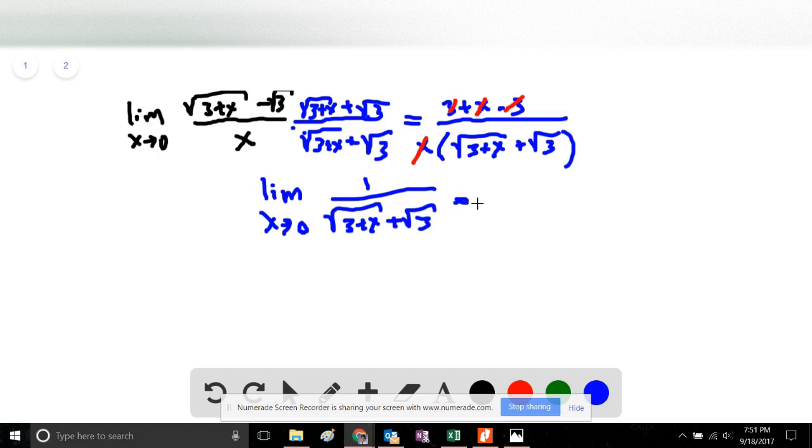If we evaluate this at x equals 0, this should give us an exact value of 1 over the square root of 3 plus the square root of 3, or 1 over 2 times the square root of 3. This is our exact solution.